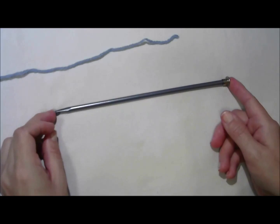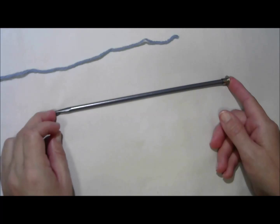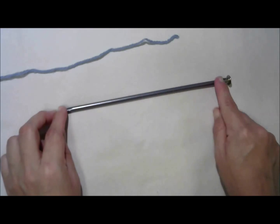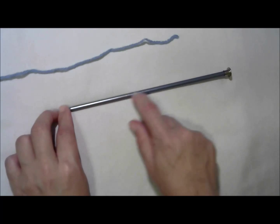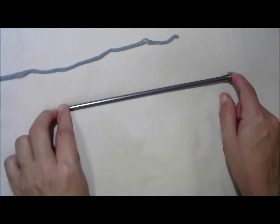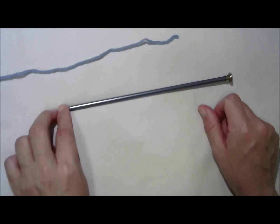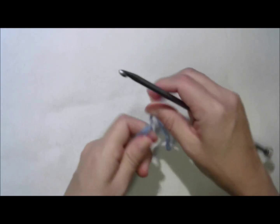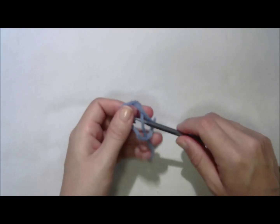You do need a stopper on one end, no matter what you use. Because in Tunisian, you're stacking up stitches. You're stacking up live loops, just like knitting. And you need a stopper or they'll all fall out the other side. The good news is Tunisian starts in the regular way, with a slip knot and a base chain.